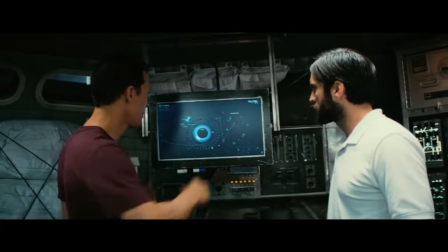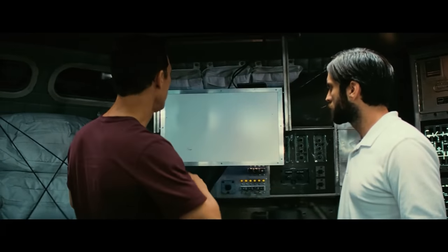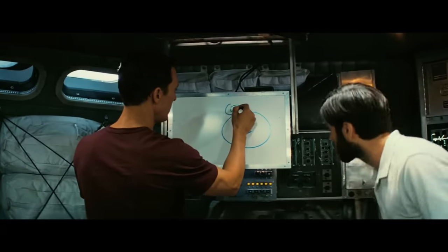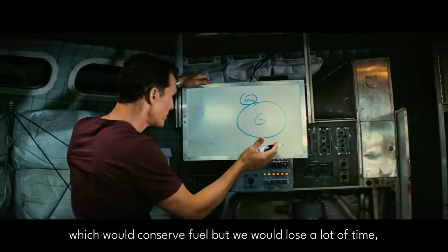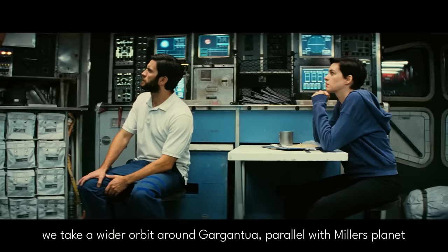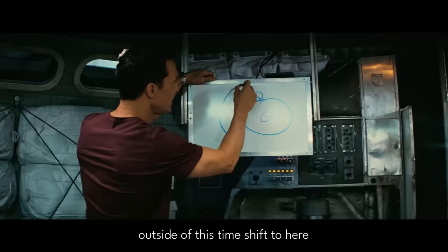When the Endurance crew are trying to figure out how they're going to make it to Miller's planet, Cooper says: Okay, here's Gargantua, here's Miller's planet. Instead of taking the Endurance into orbit around Miller's planet, which would conserve fuel but we would lose a lot of time, what if we take a wider orbit around Gargantua parallel with Miller's planet outside of this time shift?